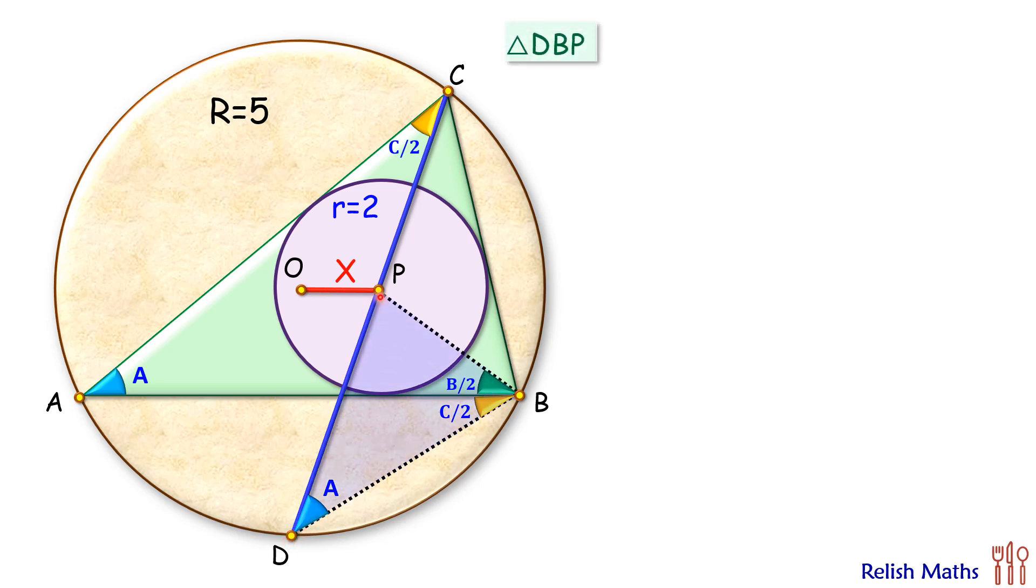Now if you look at the triangle DBP, in this triangle the sum of angles, that is angle D plus B plus P, this is 180 degrees. But angle D is equal to A, so let's replace this D with A. Angle B is nothing but angle C by 2 plus angle B by 2, so let's replace this angle B with angle B plus C by 2. And 180 degrees, let's replace it with A plus B plus C.